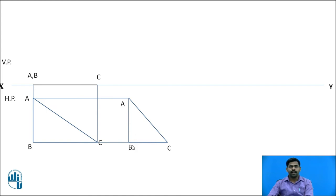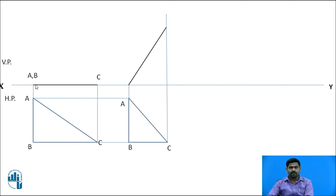Now, project points A and B into the front view — again as a single projectile — and similarly for point C. To draw the front view for this condition, take the A to C distance, measure it, and with that distance in the compass from point A, cut the projectile from point C to locate point C in the front view.